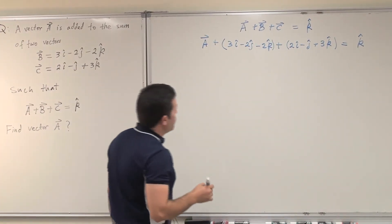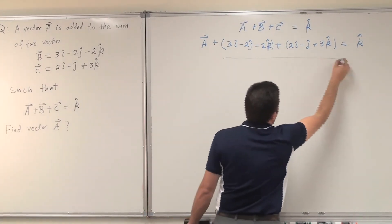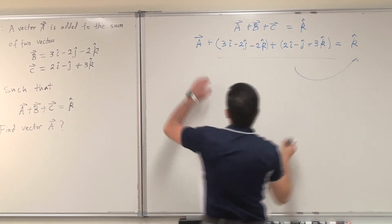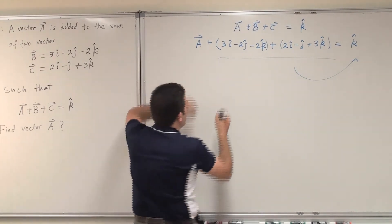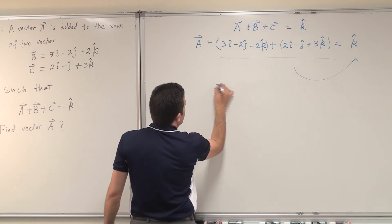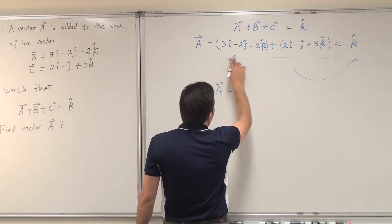A good way to do it is to take all these to the other side and leave vector A, which I should find, on the left side. So A will equal... of course I can simplify it first if I want.